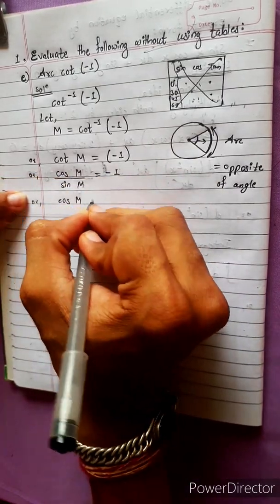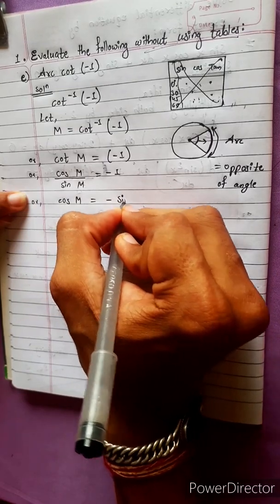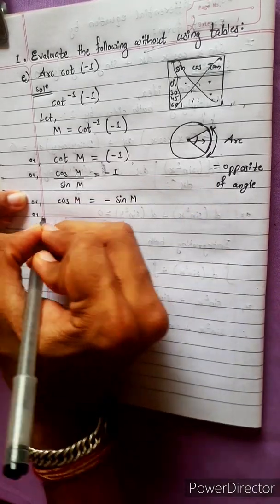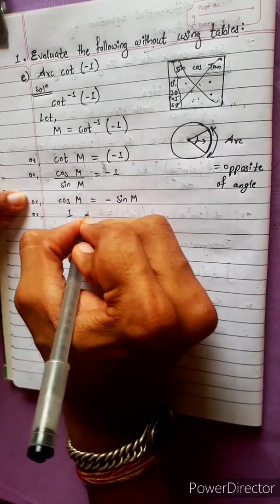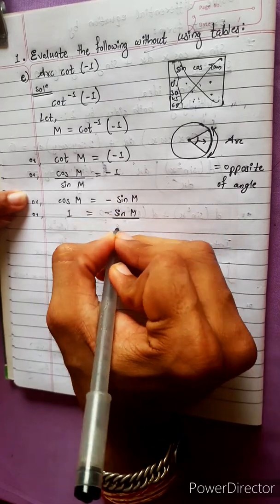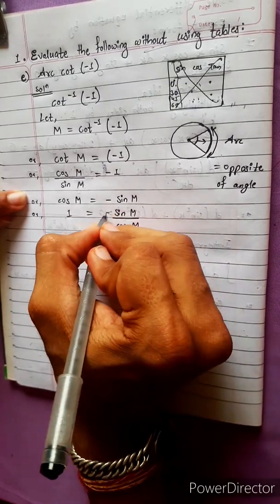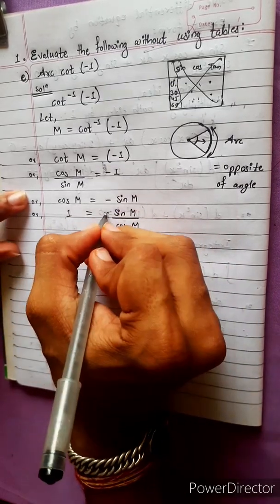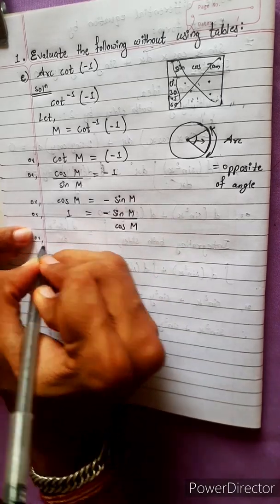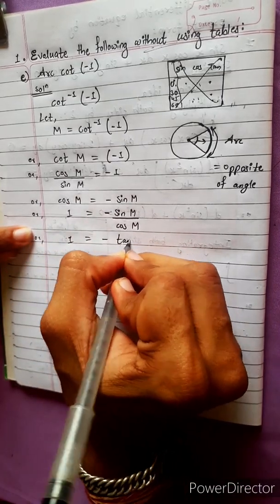This gives us cos m equals minus sin m, or equivalently 1 equals minus sin m over cos m, which means tan m equals negative 1.